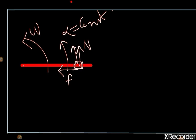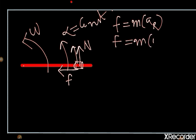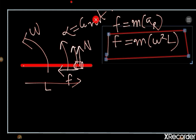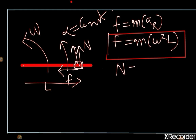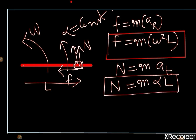So this is the free body diagram, and since gravity is neglected, there is no mg term. The friction force provides the necessary radial acceleration, giving us: friction force f = mω²L, where radius is given as L. In the tangential direction, the normal reaction N provides the tangential acceleration: N = m × alpha × L, using the formula for tangential acceleration, alpha times L.